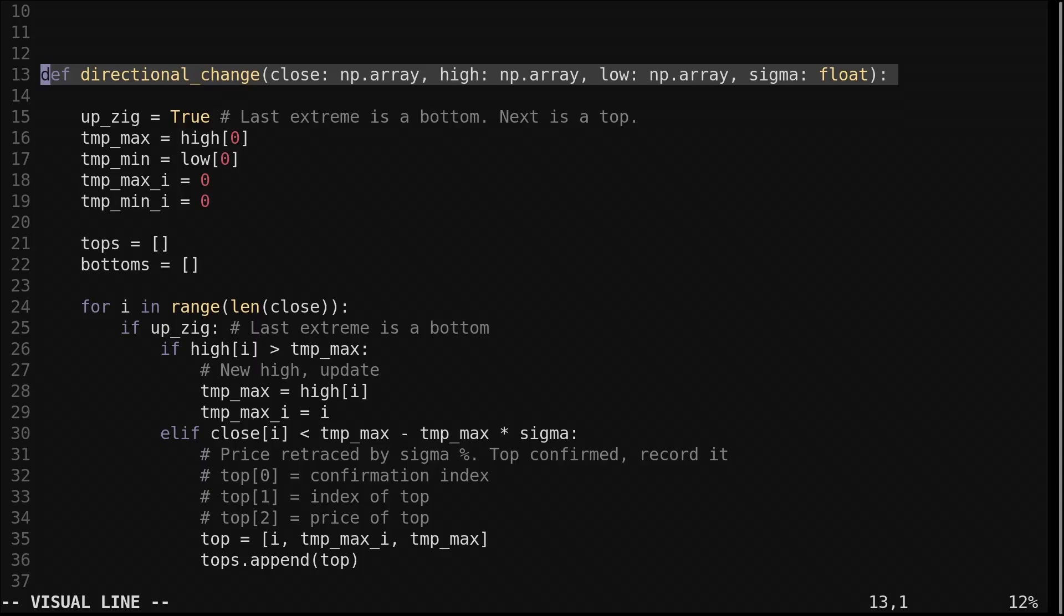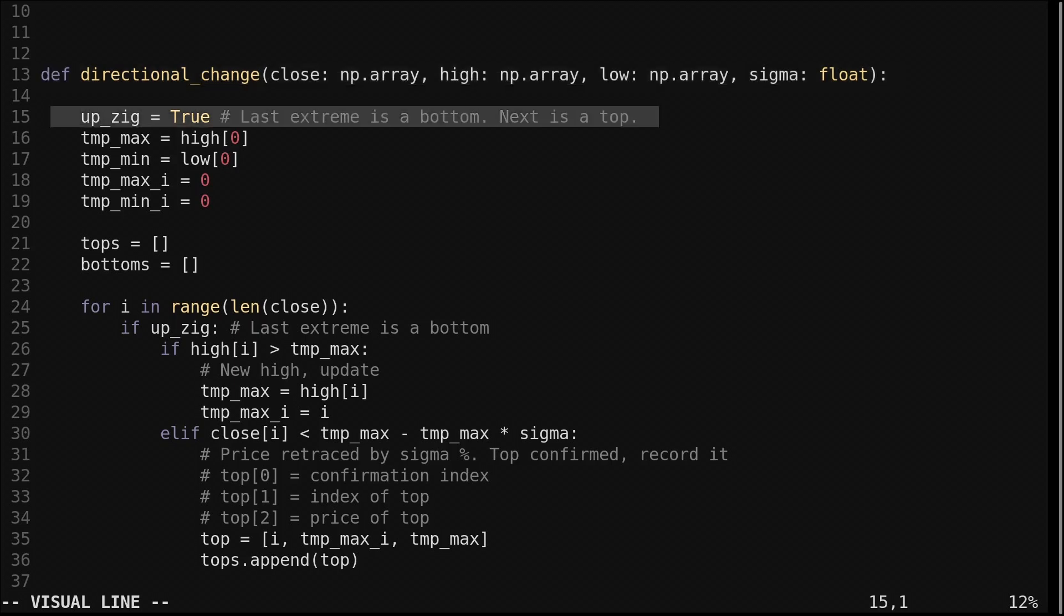Let's look at the code. We have a function directional change that takes in the close high and low, and sigma which is the percentage retracement. We track the type of the last extreme, top or bottom, with the boolean upzig.